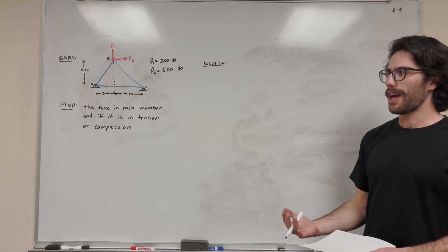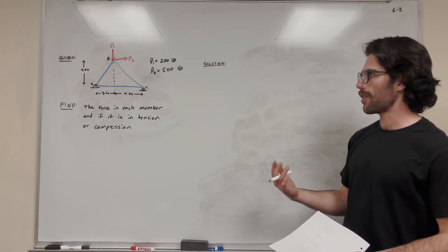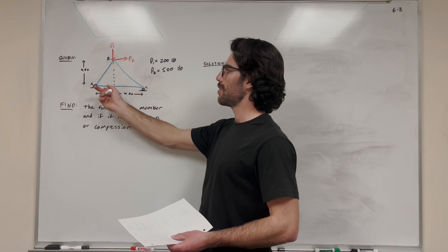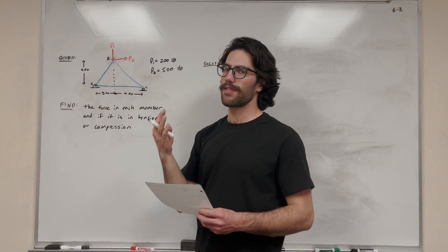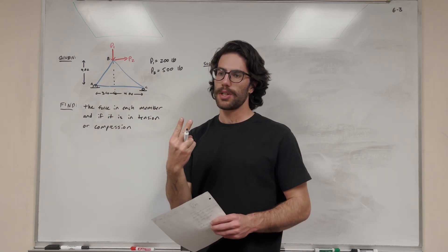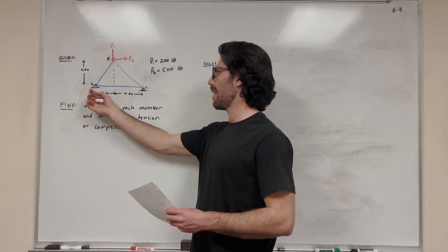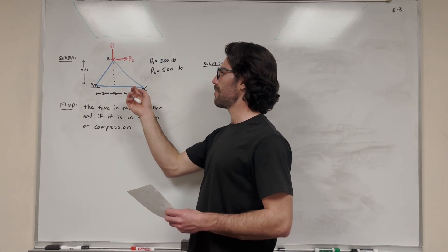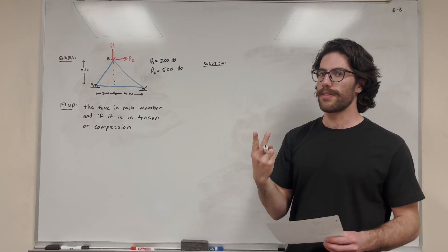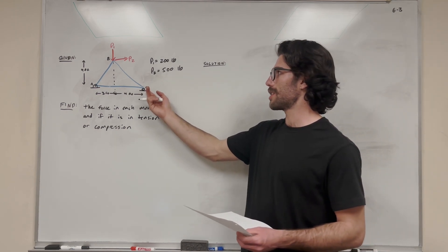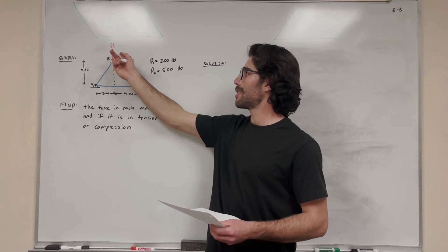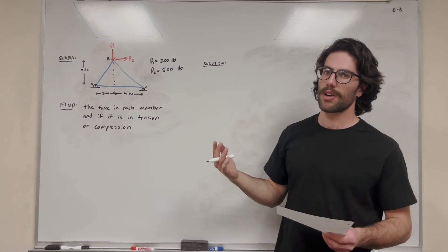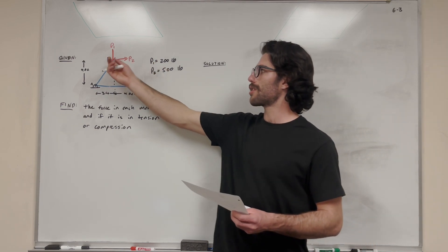So we want to start where we have the most given information. Point A has two support reactions and two member forces — that's four unknowns, but we only have two equations, so we can't solve at A. At C there's a roller giving one support reaction plus two member forces — three unknowns, still can't start there. But at B we have two known forces and two unknown member forces, so with two equations we can solve it. Let's start at B.